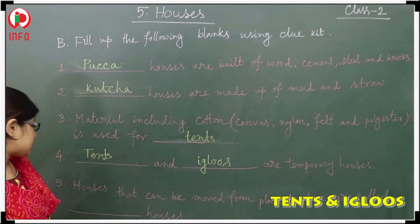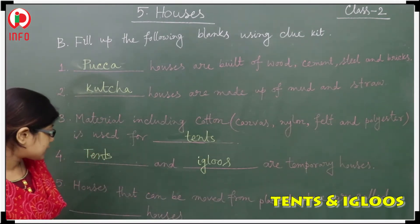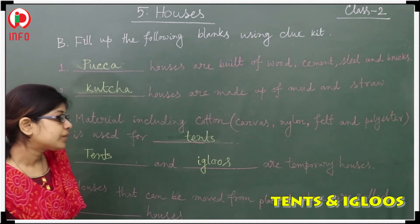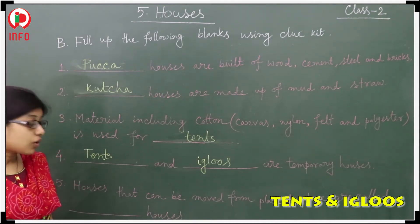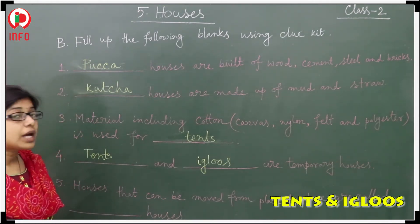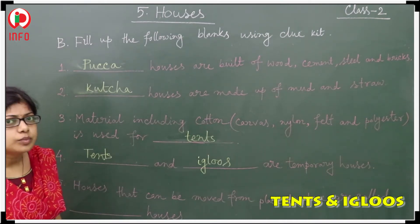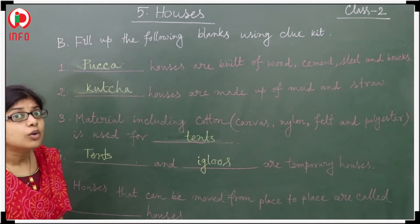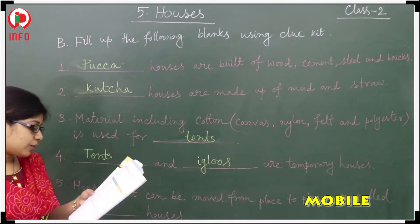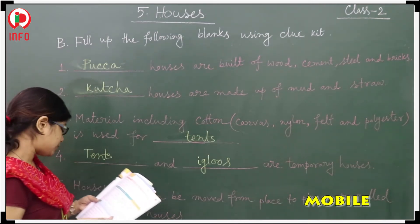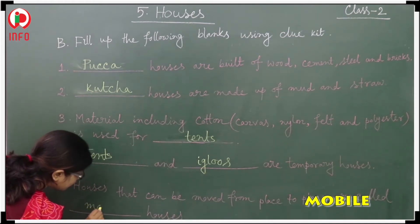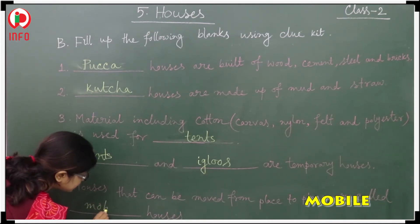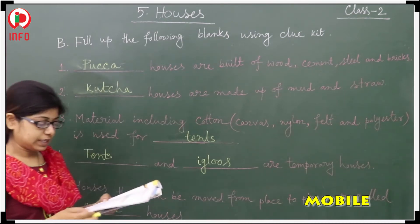The last blank: houses that can be moved from place to place are called dash house. The answer should be mobile house — M-O-B-I-L-E — mobile house.